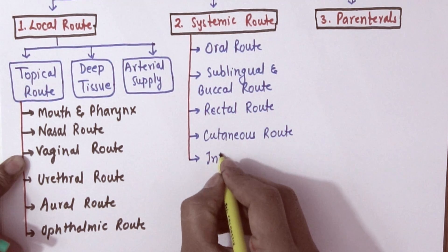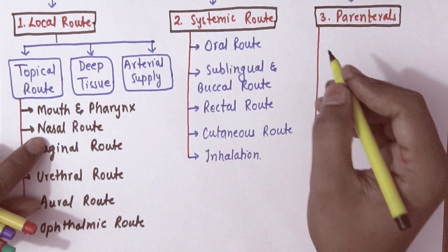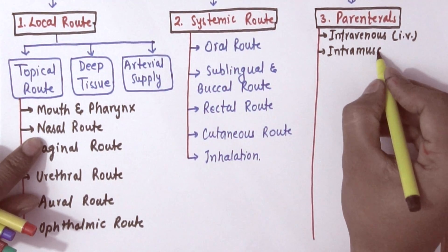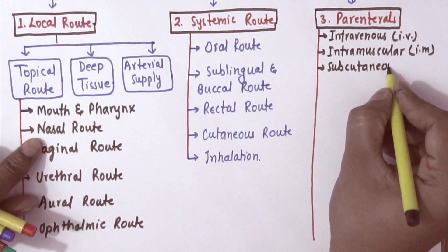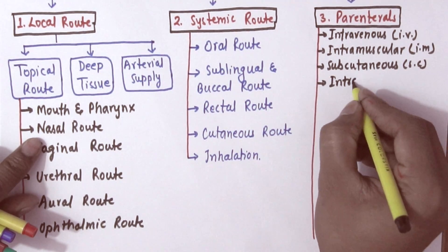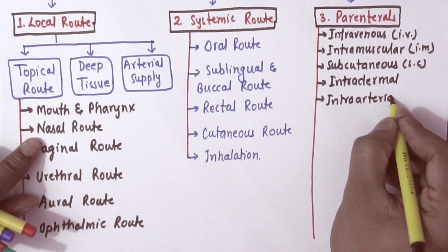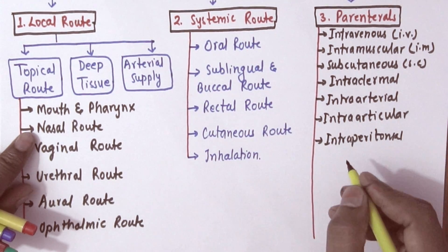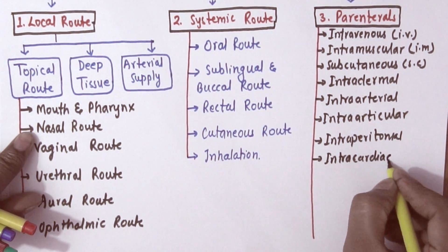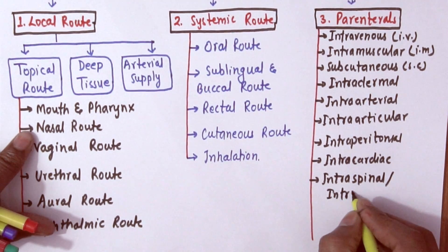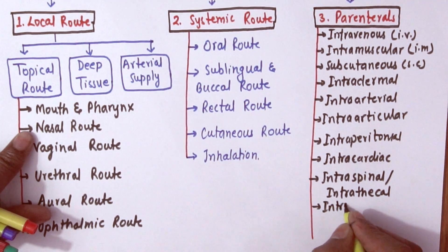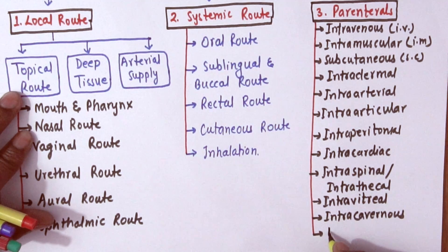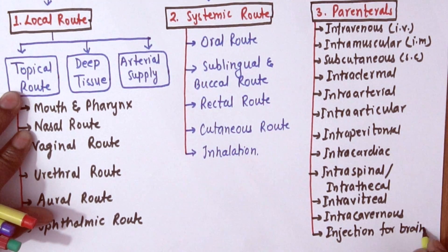Coming to parenterals, they are further classified into intravenous (IV), intramuscular (IM), subcutaneous (SC) - these three are most important. Then we have intradermal, intra-arterial, intra-articular, intraperitoneal, intrathecal, intravitriol, intracavernous, and lastly injection for brain.